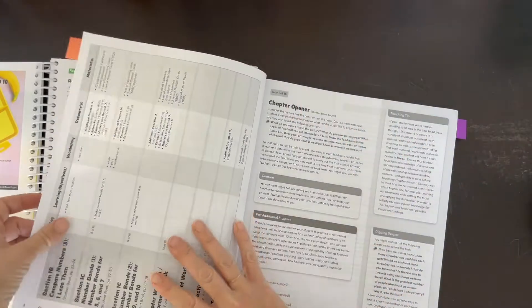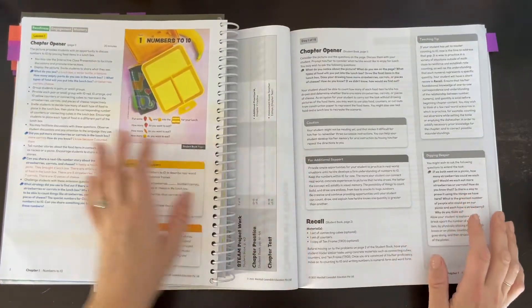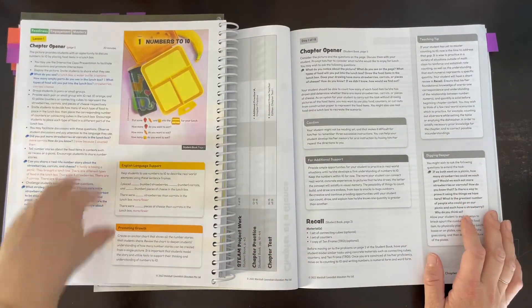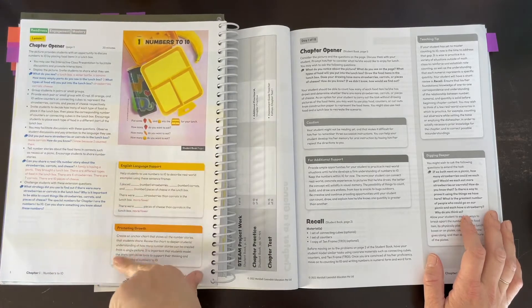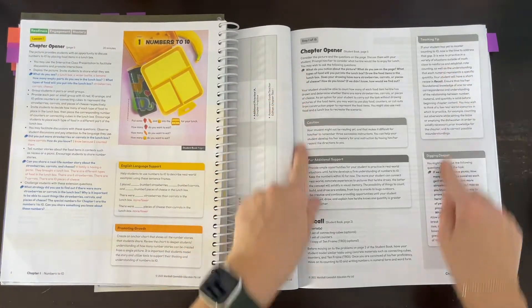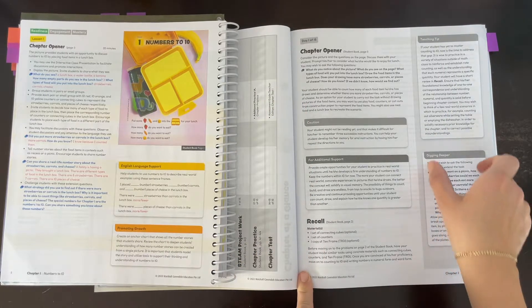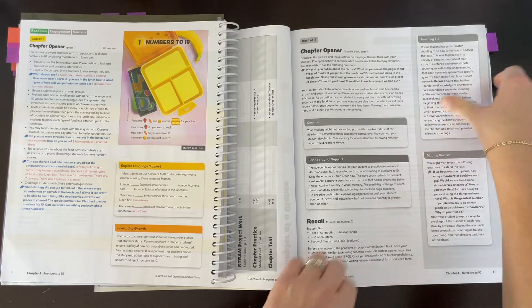Then we get into the chapter opener. We have the full color with the student page in the teacher guide for the chapter opener. I really like that this promoting growth block is here, but we don't have that in the home instructor's guide.